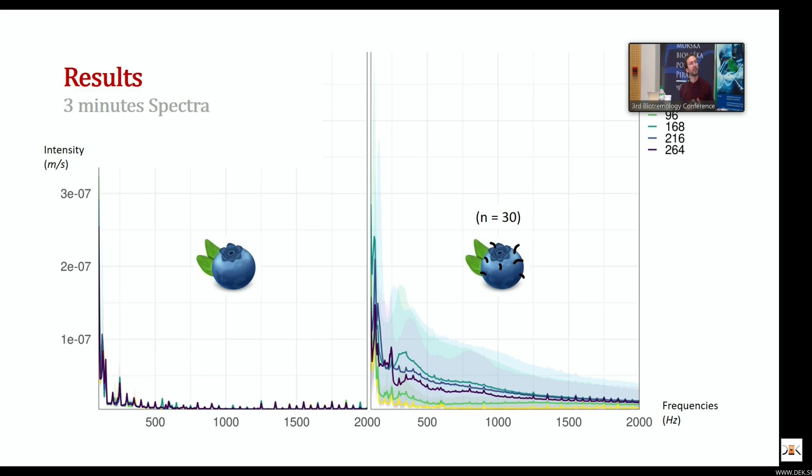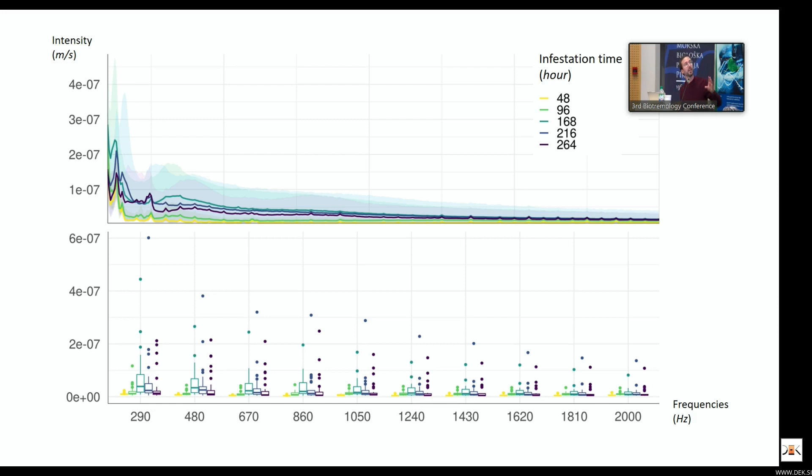Let's see the results. These are the different spectra, and you can already see visually that there are vibrations. So our infested blueberry actually vibrates. The larvae chewing within the fruits create vibrations. And you have here the different timings that show there is also difference in terms of infestation time. When the infestation occurs at different times, it's possible to determine and discriminate when this happens. Looking at the box plot with different frequencies categorized, you see there's a sort of increase from 48 hours to 168 hours, and then you have a drop of intensity.